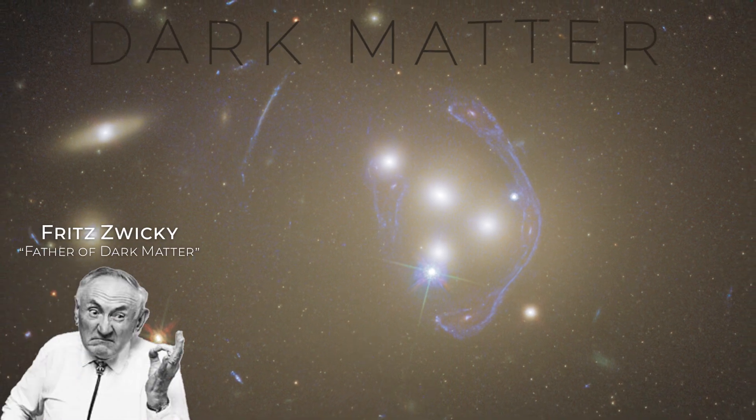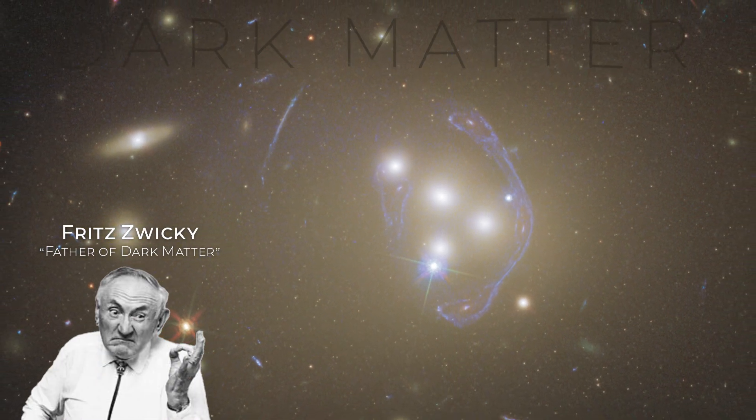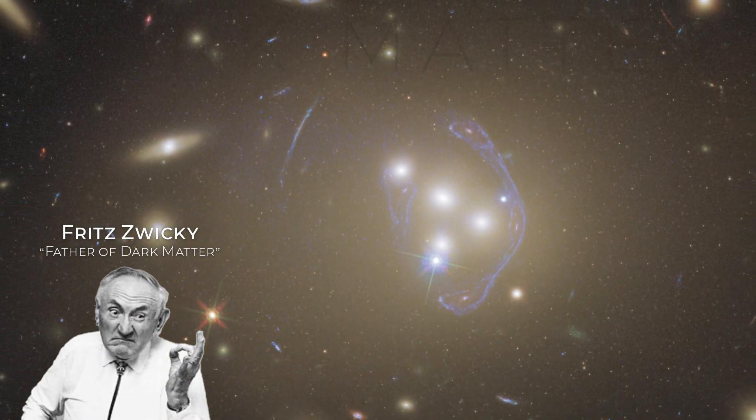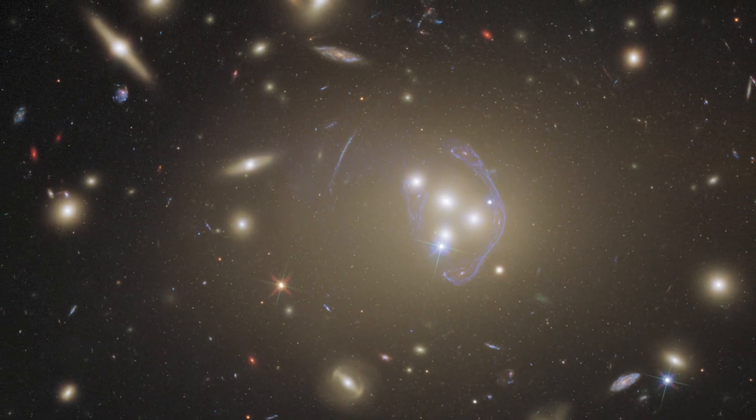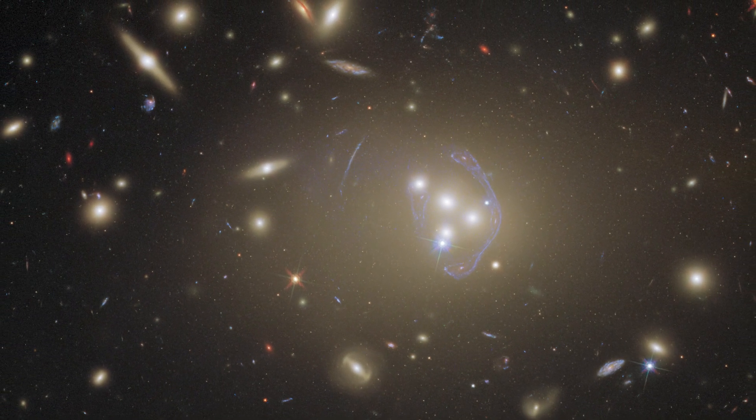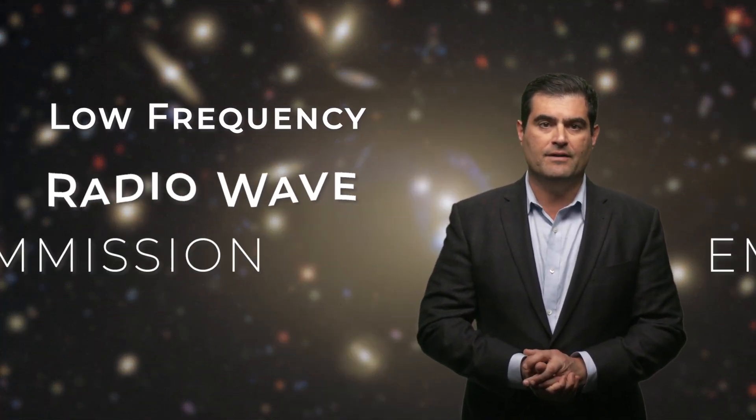Their properties led Zwicky back in the 1930s to conjecture the existence of so-called dark matter, validated by Vera Rubin. These galaxy clusters grow by creating small structures onto bigger ones. In the process of gobbling up smaller and smaller galaxies to make more massive galaxy clusters, they emit low frequency radio wave emission.